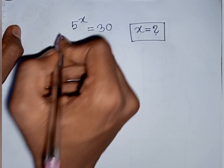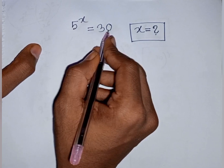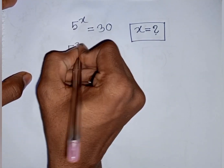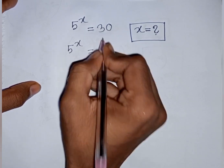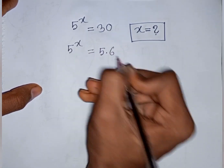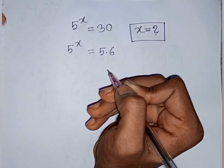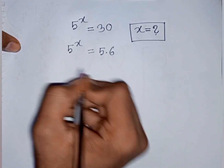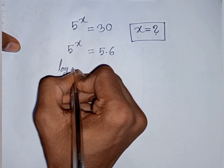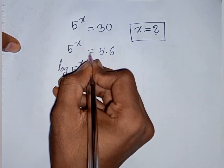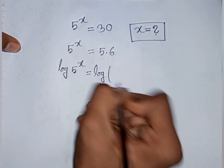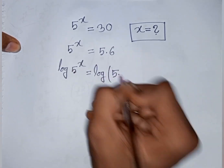How to solve: 5 power x is equal to 30 — find the value of x. So we have 5 power x equals 30, and 30 can be written as 5 times 6. Now we take log of both sides: log of 5 power x is equal to log of 5 times 6.